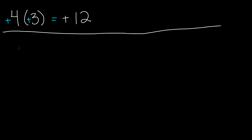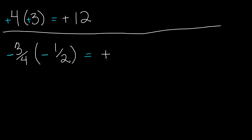Now we have negative 3 over 4, and we are going to multiply that by negative 1 half. As you can see, we are multiplying a negative with a negative — the same signs — so we know our answer is going to be positive. When you multiply fractions, you multiply the numerators with the numerators and the denominators with the denominators. So 3 times 1 gives us 3, and 4 times 2 gives us 8. So positive 3 over 8 is our answer.